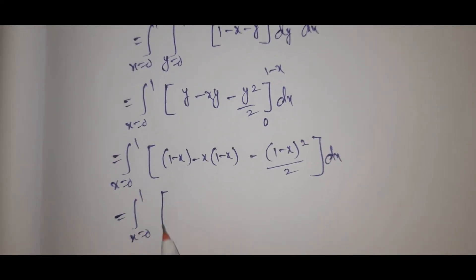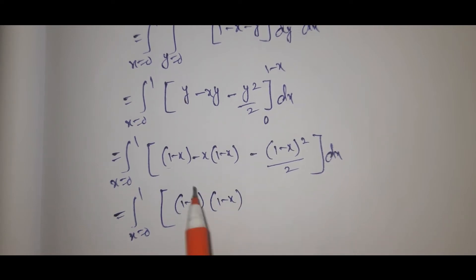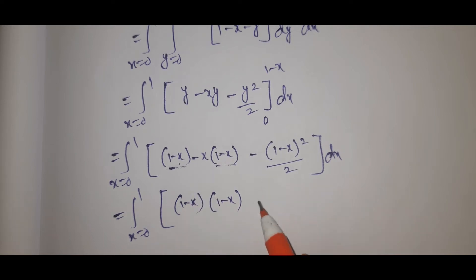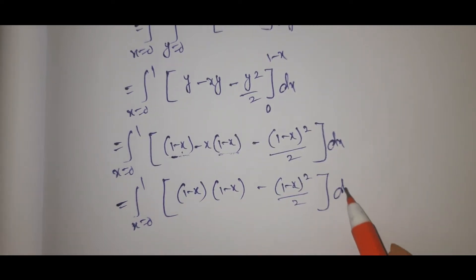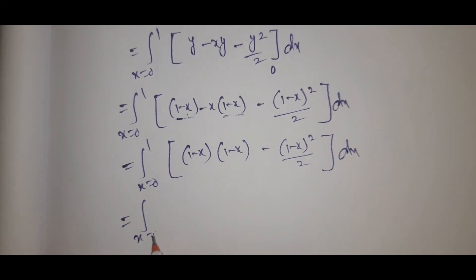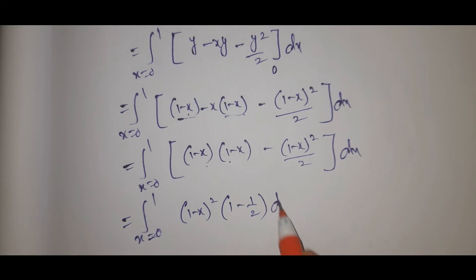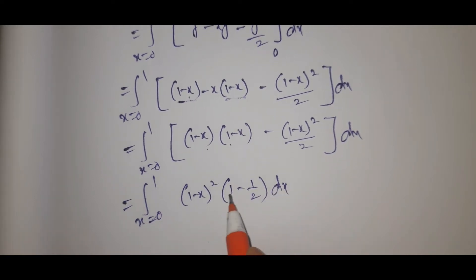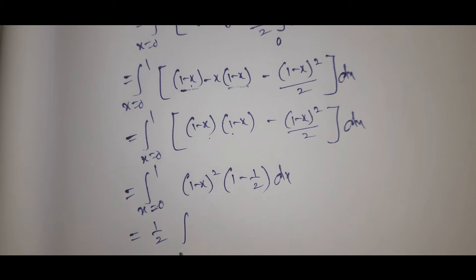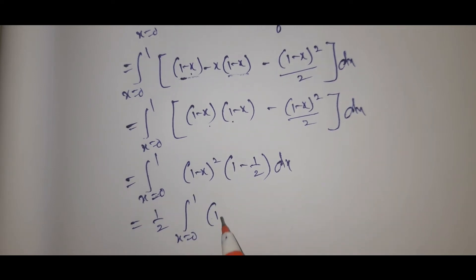Integral x equals 0 to 1. Here we have 1 minus x, so simplifying gives 1 by 2 times integral x equals 0 to 1 of 1 minus x whole square dx.